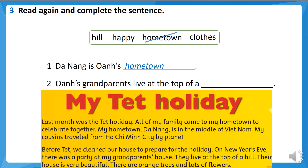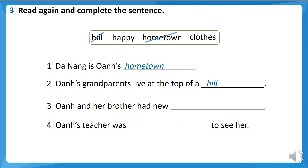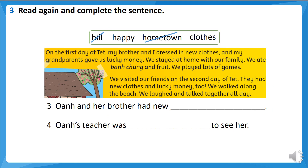Number two: Oanh's grandparents live at the top of... Look at this — 'They live at the top of a hill.' So the answer for number two is: hill. Good. Now the next question, number three: Oanh and her brother had new... Look at this — 'My brother and I dressed in new clothes.' So the answer is: